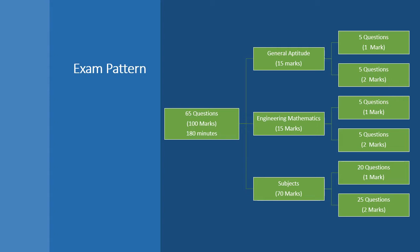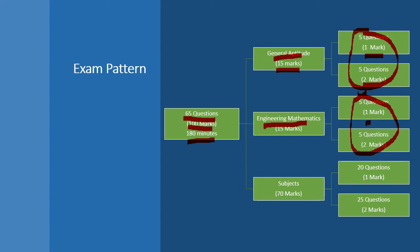The GATE Biotechnology paper has a total of 65 questions carrying 100 marks, to be attempted within 180 minutes. The paper is divided into three sections. Section 1, General Aptitude, has 10 questions — five of one mark and five of two marks — totaling 15 marks. Section 2, Engineering Mathematics, similarly has 10 questions totaling 15 marks. Section 3, the core subject, has 45 questions — 20 of one mark and 25 of two marks — totaling 70 marks.